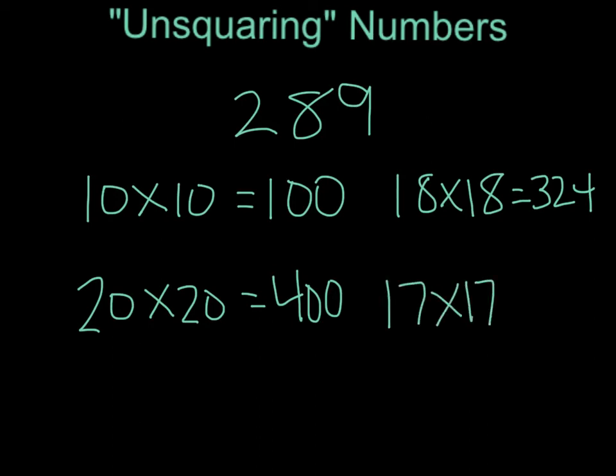17 times 17 is equal to 289. I have found the answer I was looking for. The square root or unsquare of 289 is 17. 17 times 17, or 17 squared, equals 289.